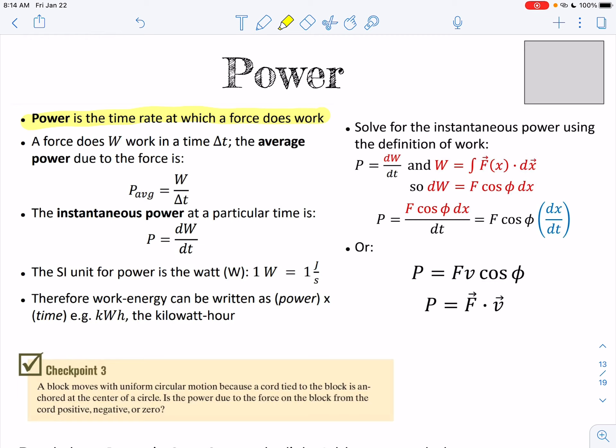So a force does W work in a time T. So then basically all you're going to do is, if you want just the average power, you're going to do the work divided by the time. And you can find this work through various ways, like force times distance, or it might be the change in kinetic or gravitational potential energy, depending on what the question asks.